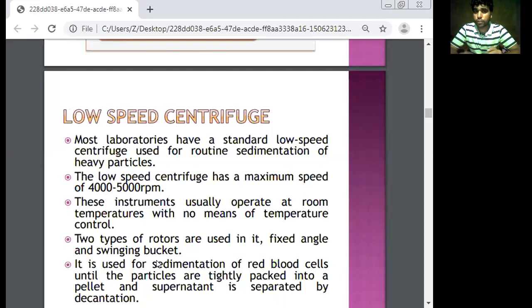The low speed centrifuge has a maximum speed of 4000 to 5000 RPM. These instruments usually operate at room temperature with no means of temperature control. Two types of rotors are used: fixed angle and swinging bucket.